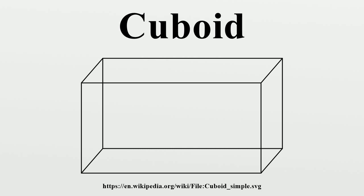A cuboid with integer edges as well as integer face diagonals is called an Euler brick, for example with sides 44, 117, and 240. A perfect cuboid is an Euler brick whose space diagonal is also an integer. It is currently unknown whether a perfect cuboid actually exists.